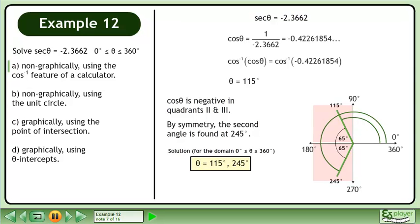The solution over the domain where theta is between 0 degrees and 360 degrees is 115 degrees and 245 degrees.